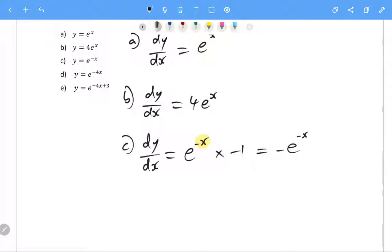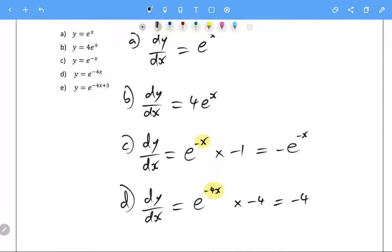Alrighty, let's look at d. d is e to the negative four x. So dy dx, once again chain rule. The derivative of e to the negative four x is e to the negative four x, multiplied by the derivative of negative four x. What's the derivative of this? The derivative of that is just negative four. And so our final answer is just negative four e to the negative four x.